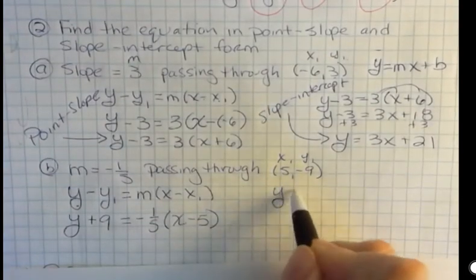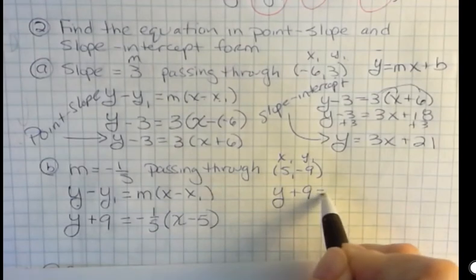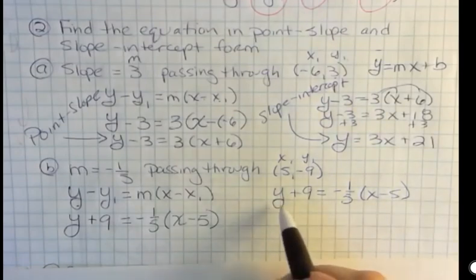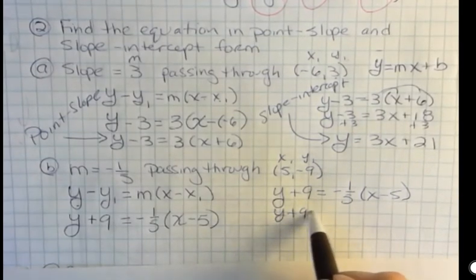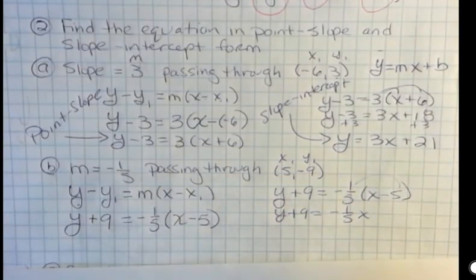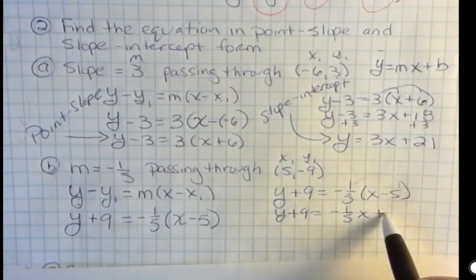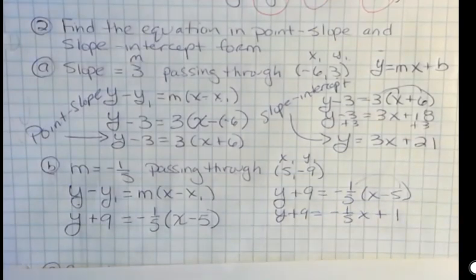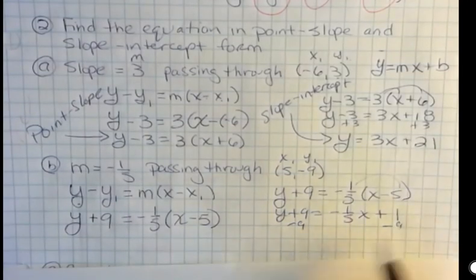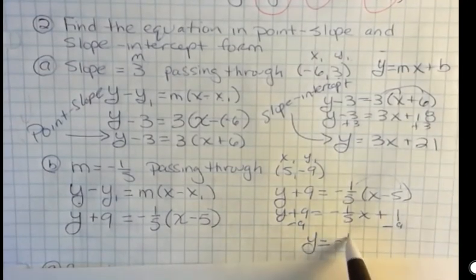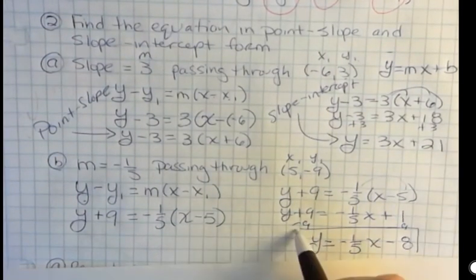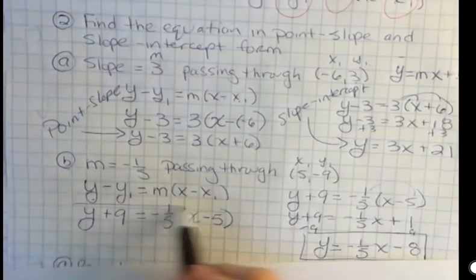Now I want to rearrange that to get y by itself to get slope-intercept form. So I have nothing. I'm not doing anything on the left. I have negative 1 fifth x. Negative 1 fifth times negative 5 is positive 1. You can do that off to the side or use your calculator or whatever. Now all I have to do is subtract 9 and I get y equals negative 1 fifth x minus 8. That's slope-intercept form. This is point-slope form.